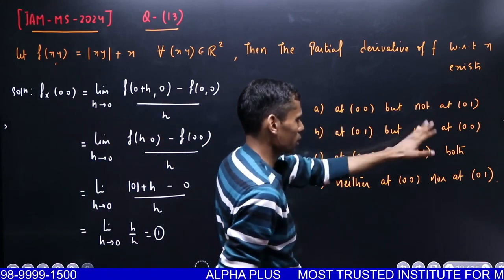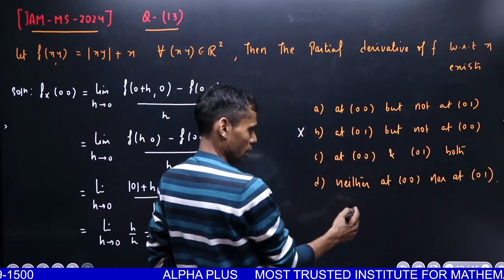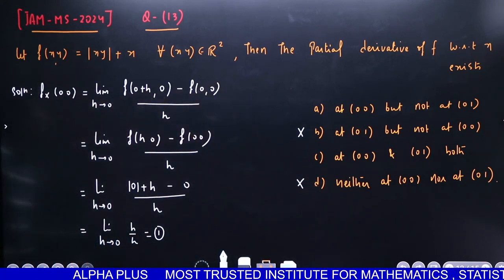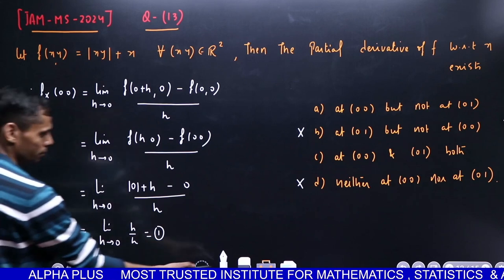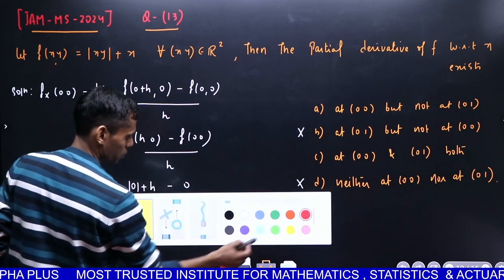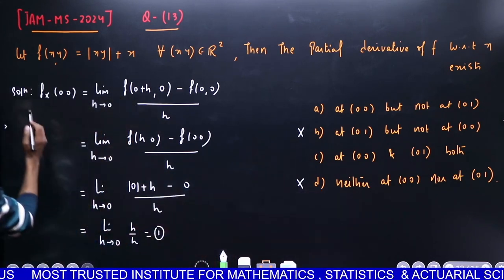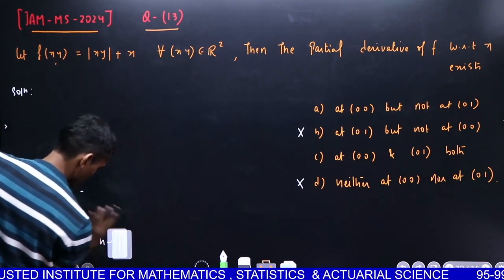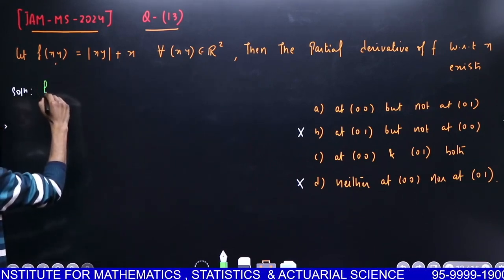Any student can see what the answer will be. With x replaced by h and y by 0, this becomes h/h, which has limit equal to 1.